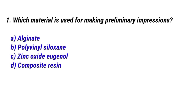Question No. 1: Which material is used for making preliminary impressions? The right answer is Option A: Alginate.